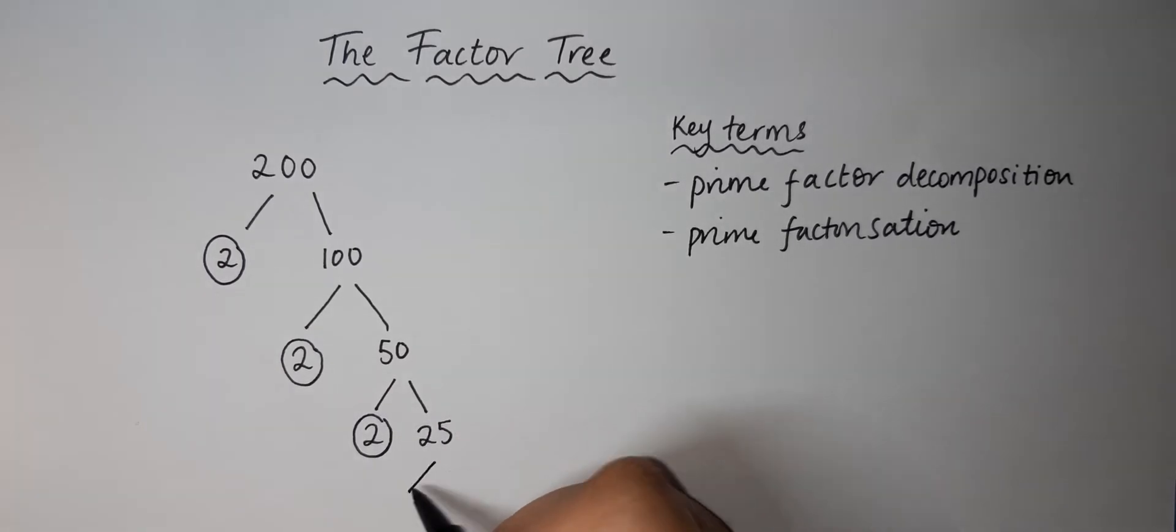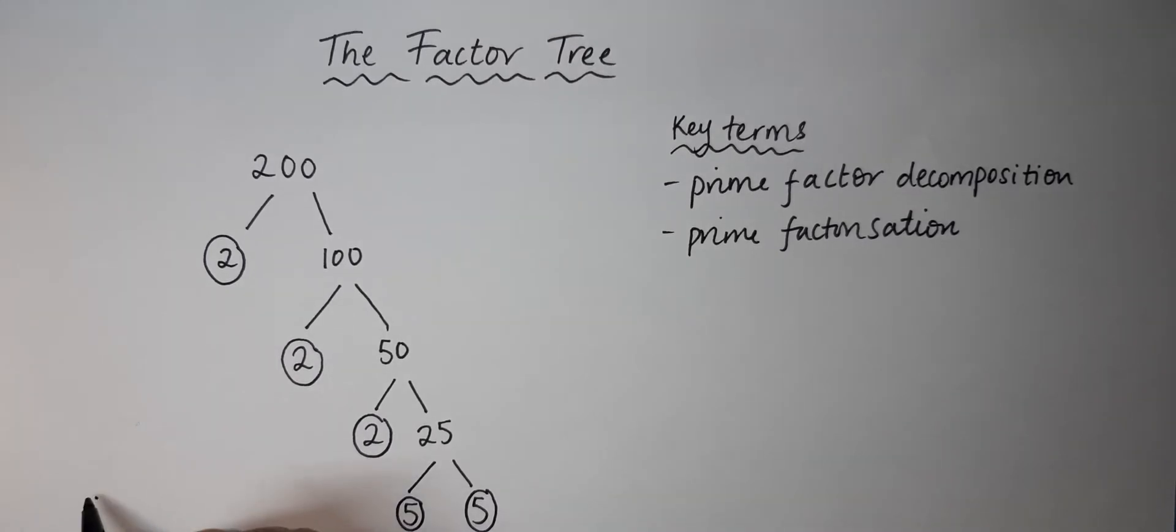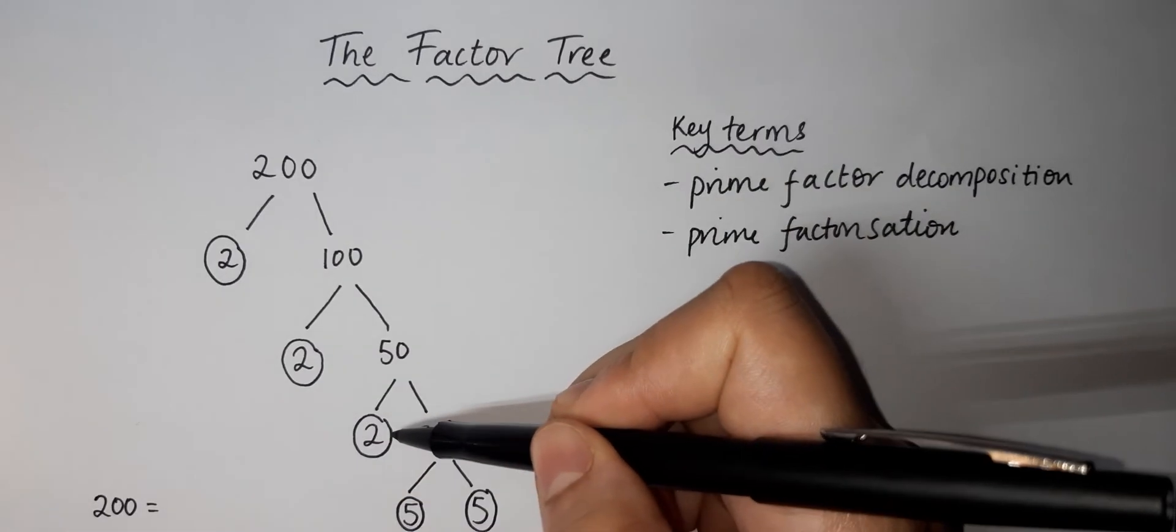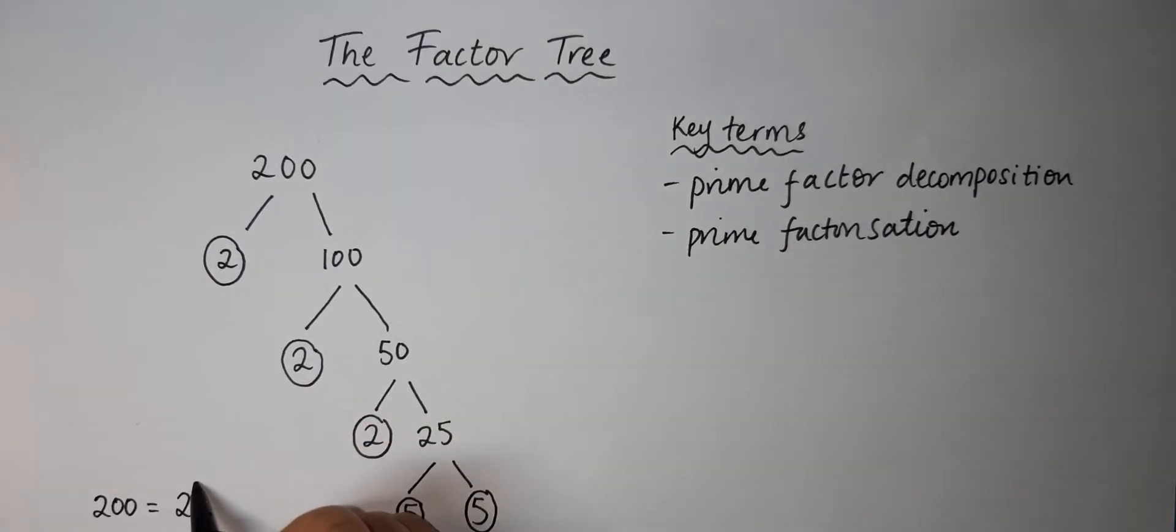We can see that 25 can split into 5 and 5, because 5 times 5 is 25. Now 5 and 5 are both prime numbers, so we circle them and we stop. That means we can write 200 as 2 cubed times 5 squared.